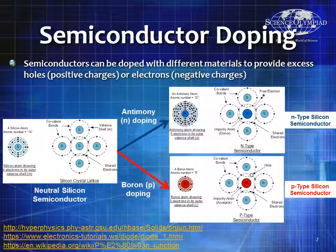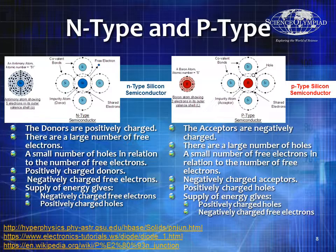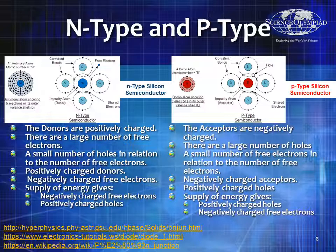The great part about silicon and other semiconductors is you can also dope it the other way. You can make it into a P-type semiconductor by doping it with something like boron. Boron has one less electron than silicon, so you're essentially adding in extra holes. Here is a way of showing the difference between N-type and P-type.